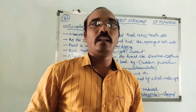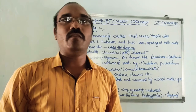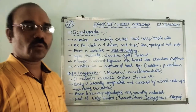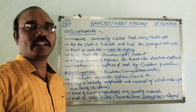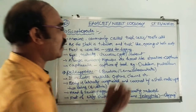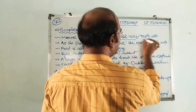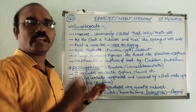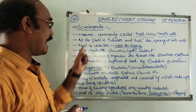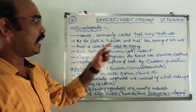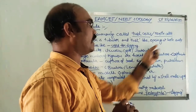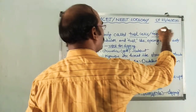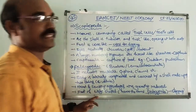Scaphopoda organisms are mostly found surviving in the sea. They are commonly called tusk shells or tooth shells. The shell is tubular and tusk-like, open at both ends. That is why they are called tooth shells or tusk shells.